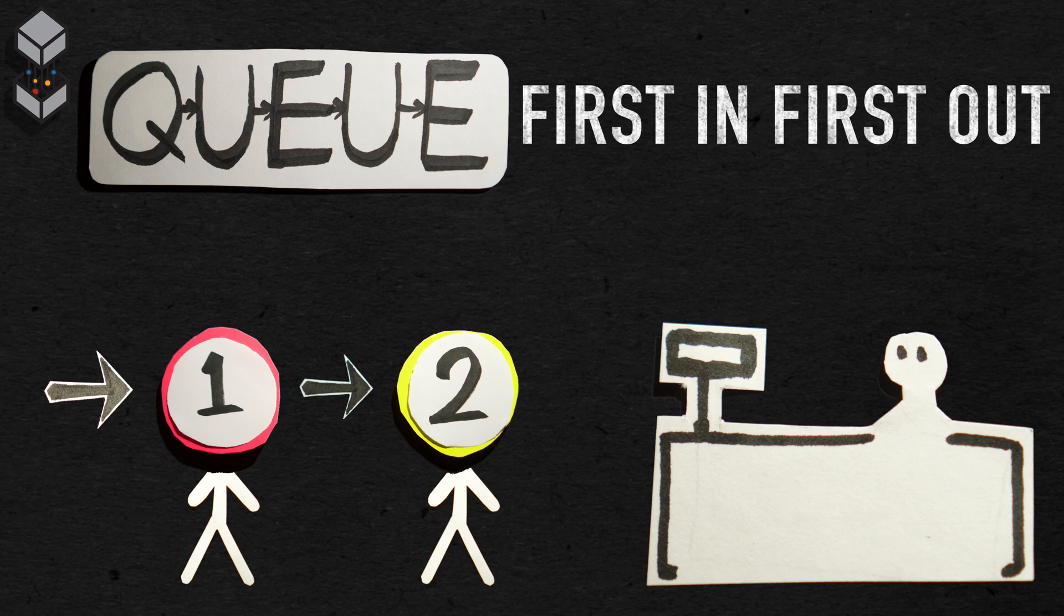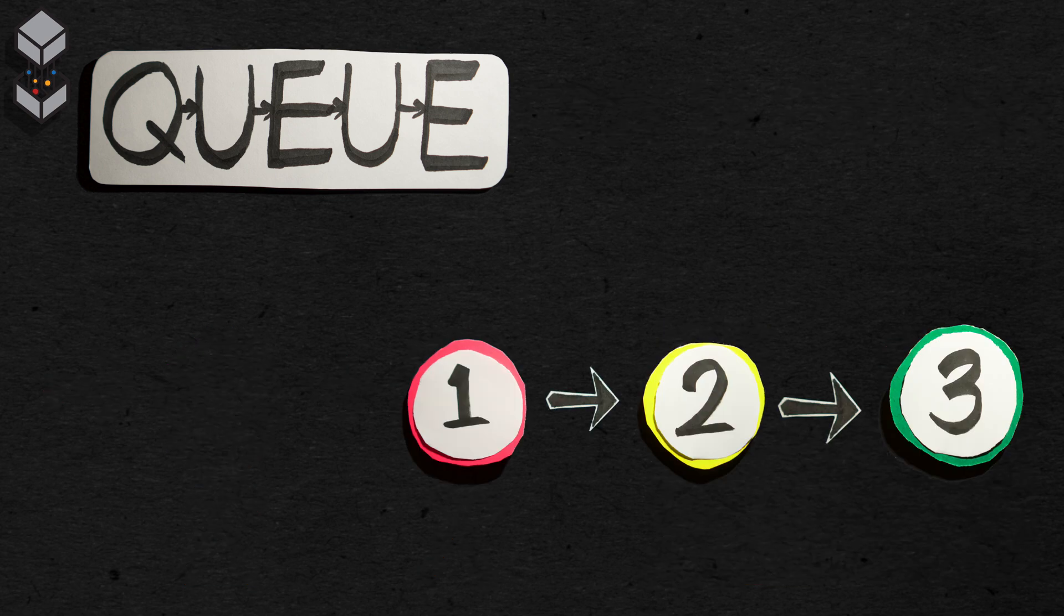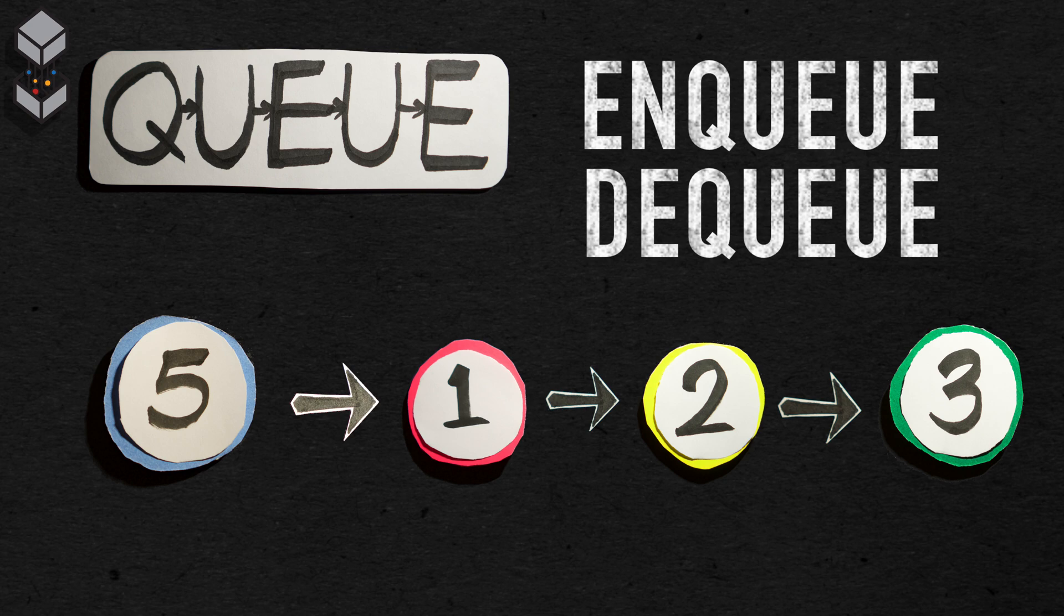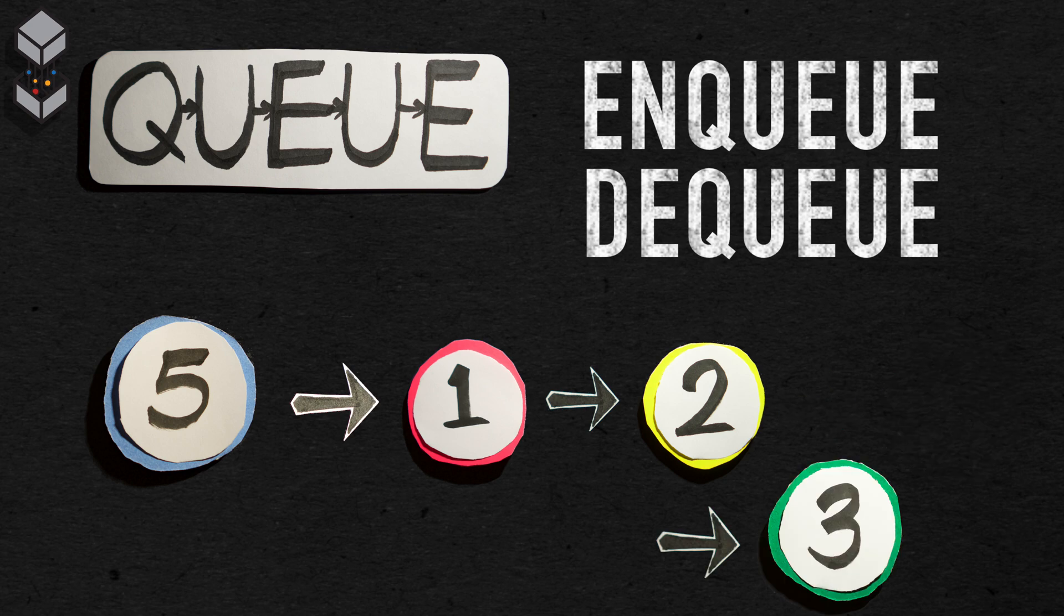A queue is always ordered by the time of insertion. In this example, the rightmost node was placed in first, and the leftmost node was placed last. A queue will have many different operations associated with it. This may include enqueue, which is used to add a node to the end of the queue, or dequeue, which removes the first node from the queue and returns it.